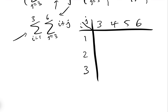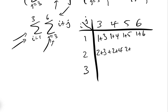The very first iteration: when i equals one and j equals three, i plus j is one plus three. Then one plus four, one plus five, one plus six. The second iteration with i equals two: two plus three, two plus four, two plus five, and two plus six. The third iteration with i equals three: three plus three, three plus four, three plus five, and three plus six.